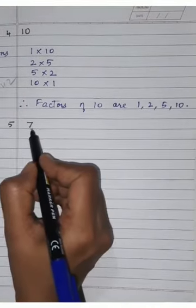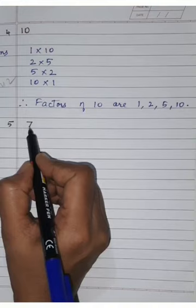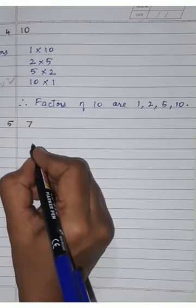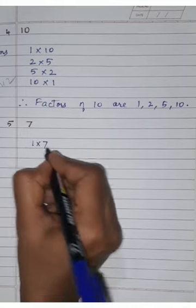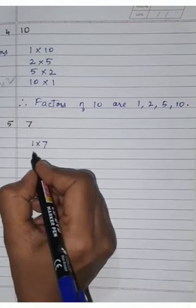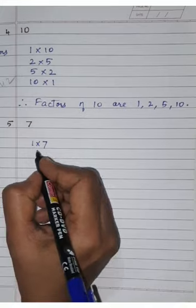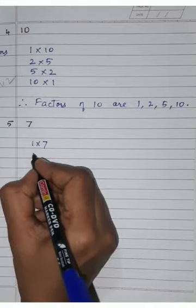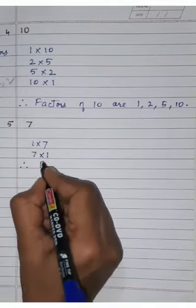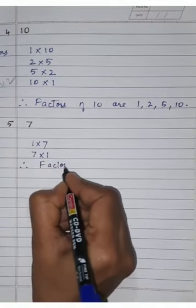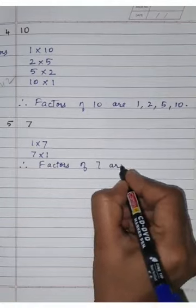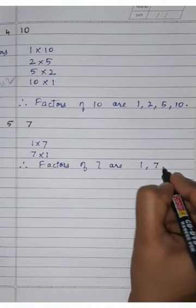Question number 5 is to find the factors of 7. 7 comes in: 1 × 7 = 7. Two, three, four, five, and six tables are not coming. Directly in the 7 times table: 7 × 1 = 7. Therefore, factors of 7 are 1, 7.